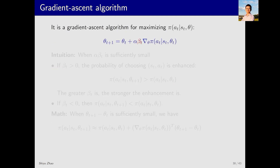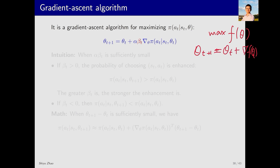This equation is actually optimizing pi(a_t | s_t). For a general objective f(theta), gradient ascent gives theta_{t+1} = theta_t + step_size * gradient of f(theta). Similarly, this algorithm is optimizing pi(a_t | s_t) by updating theta.